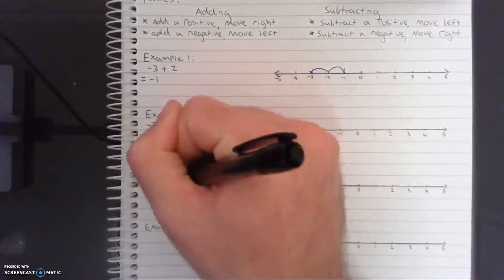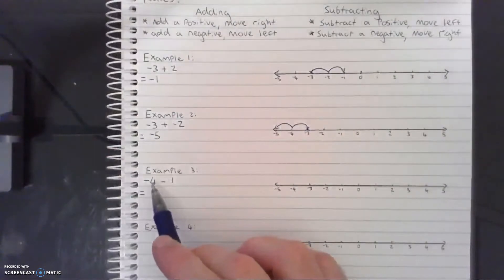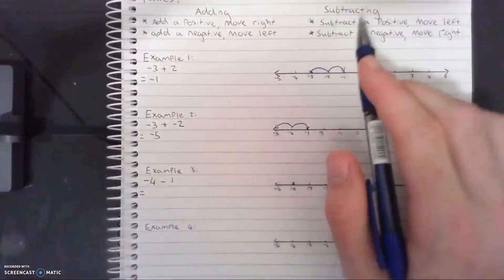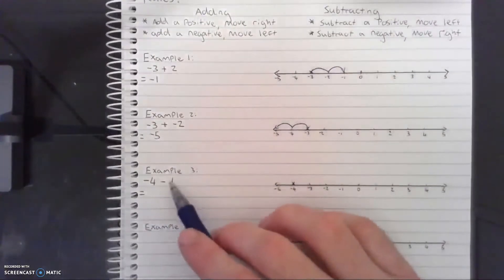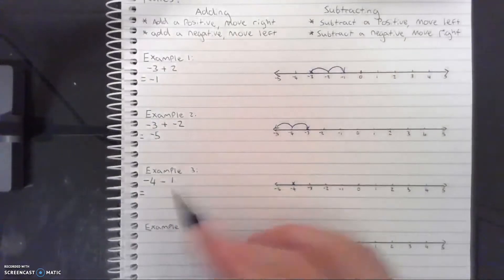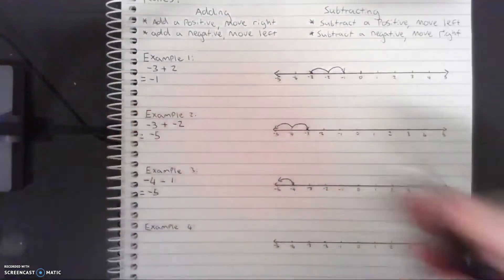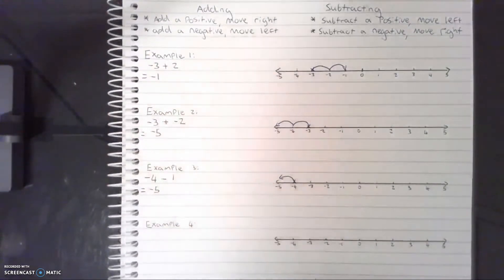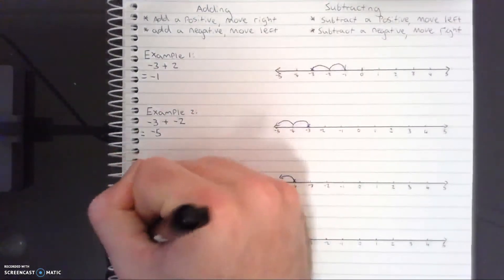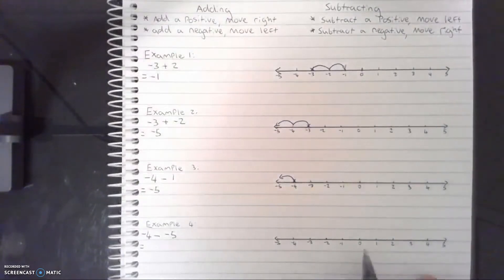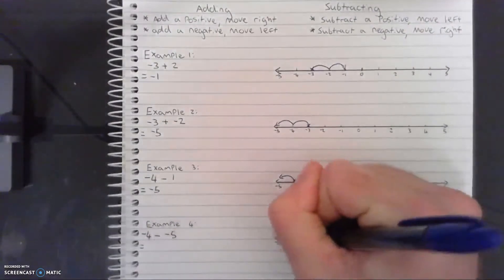Moving on to example 2: negative 3 plus negative 2. We start the same — negative 3 is our starting number, so we put x next to negative 3. We're still adding, but we're adding a negative 2 this time, so we move left two spaces: 1, 2. The answer is negative 5.